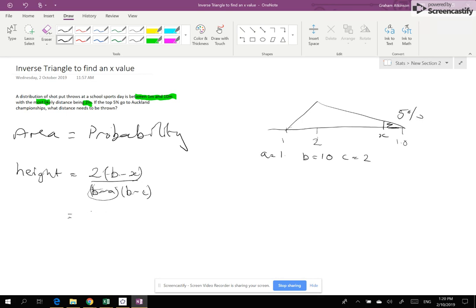So therefore the height is 2 lots of 10 minus X over 10 minus 1 times 10 minus 2. Now, bizarrely, I'm not going to do anything more with that at the moment. I'm just going to leave that as is.